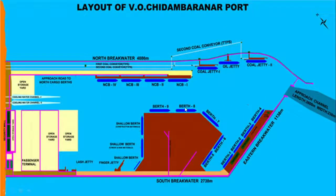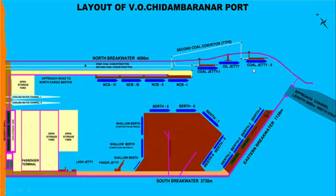Let's understand how the port works. There are different berths depending on what material the ships will bring or take away. You can see berths 1 through 9, each serving a different purpose. For example, there are facilities for coal — where ships can be filled with coal. From different berths, material can be collected and transported. Each berth is made for a particular purpose, so the corresponding type of ship will come to upload or download material.